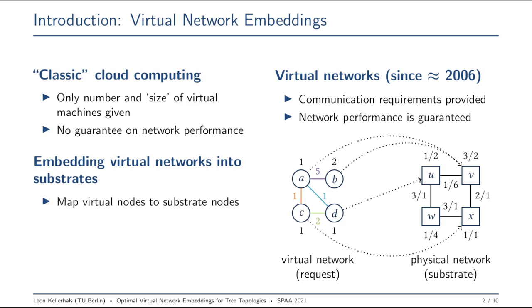I now need to map the virtual nodes onto the substrate nodes. For example, I can map both A and B onto my physical node V, and then the virtual edges I can map also onto paths within the substrate. For example, I map the edge AD onto the path from V via X, W, to U.